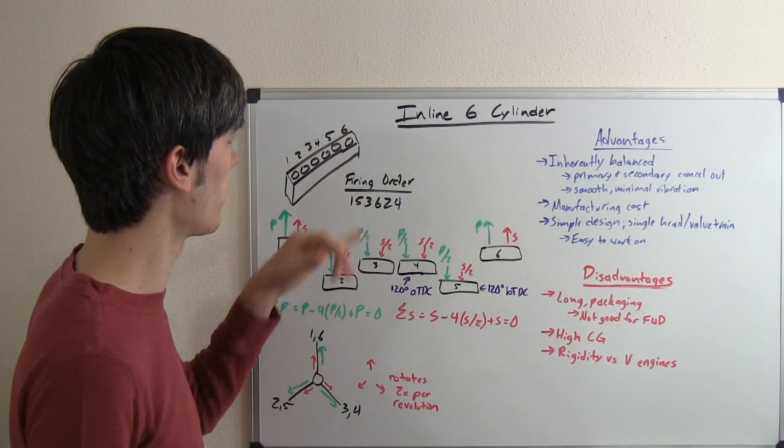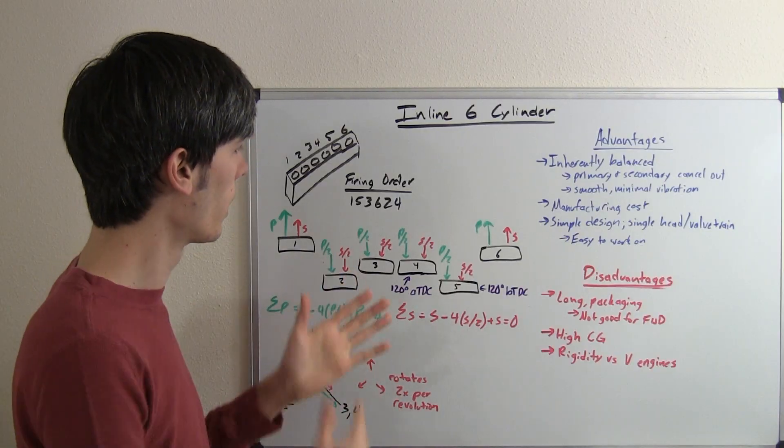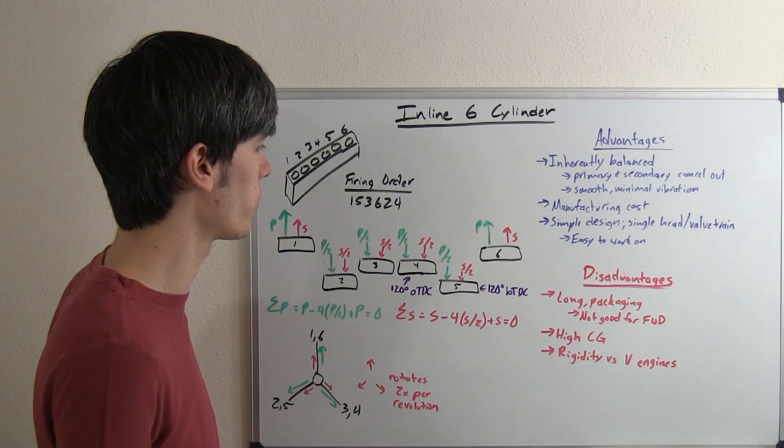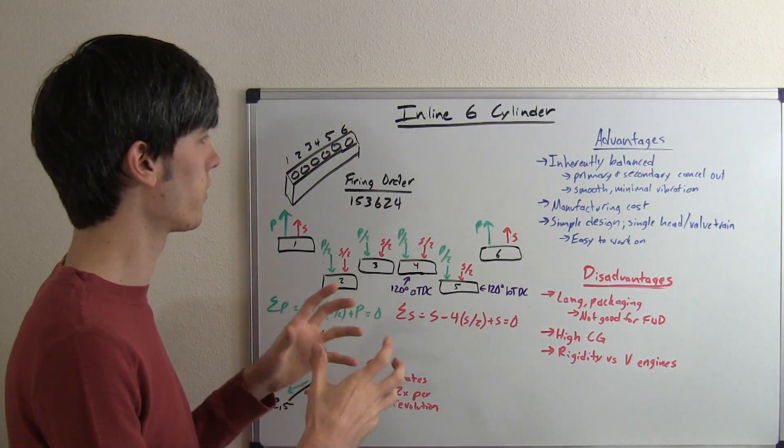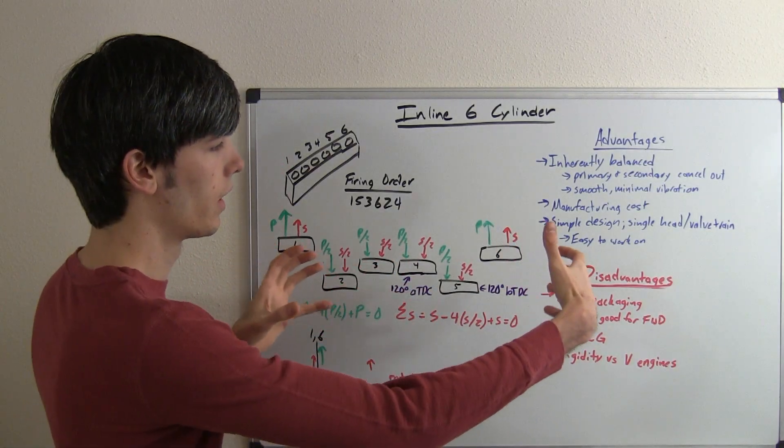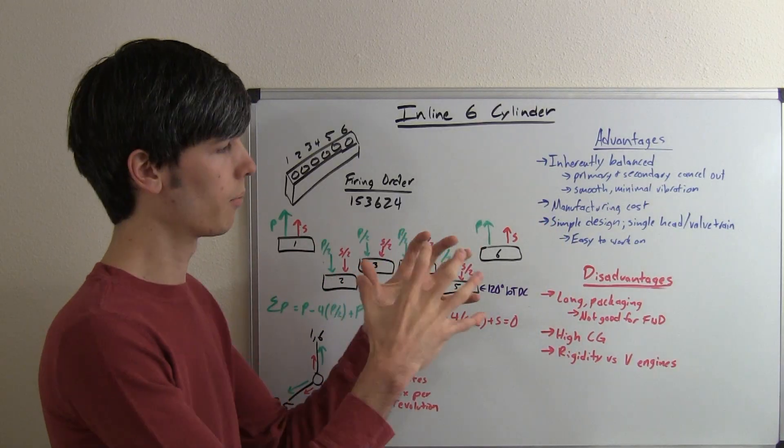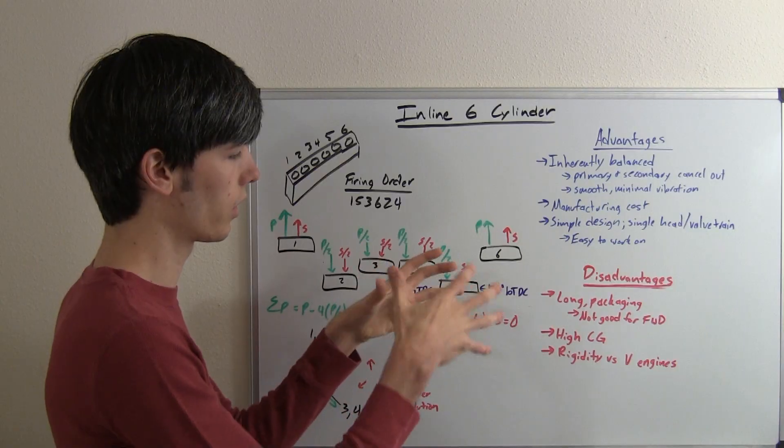So the other problem with this inline six is a high center of gravity versus like a flat engine. And then one of the big disadvantages versus a V-style engine is the rigidity. So it's this very long system that doesn't have the rigidity of a very compact V engine where you've got a more concentrated mass all in a more uniform pattern.